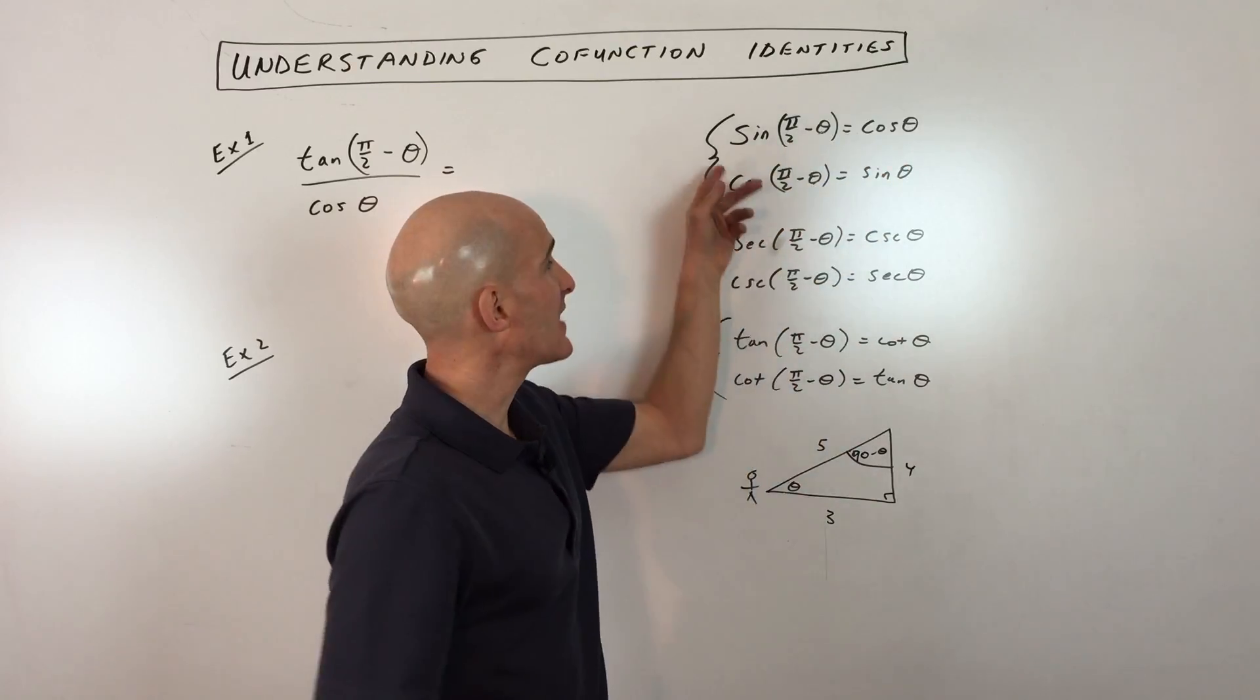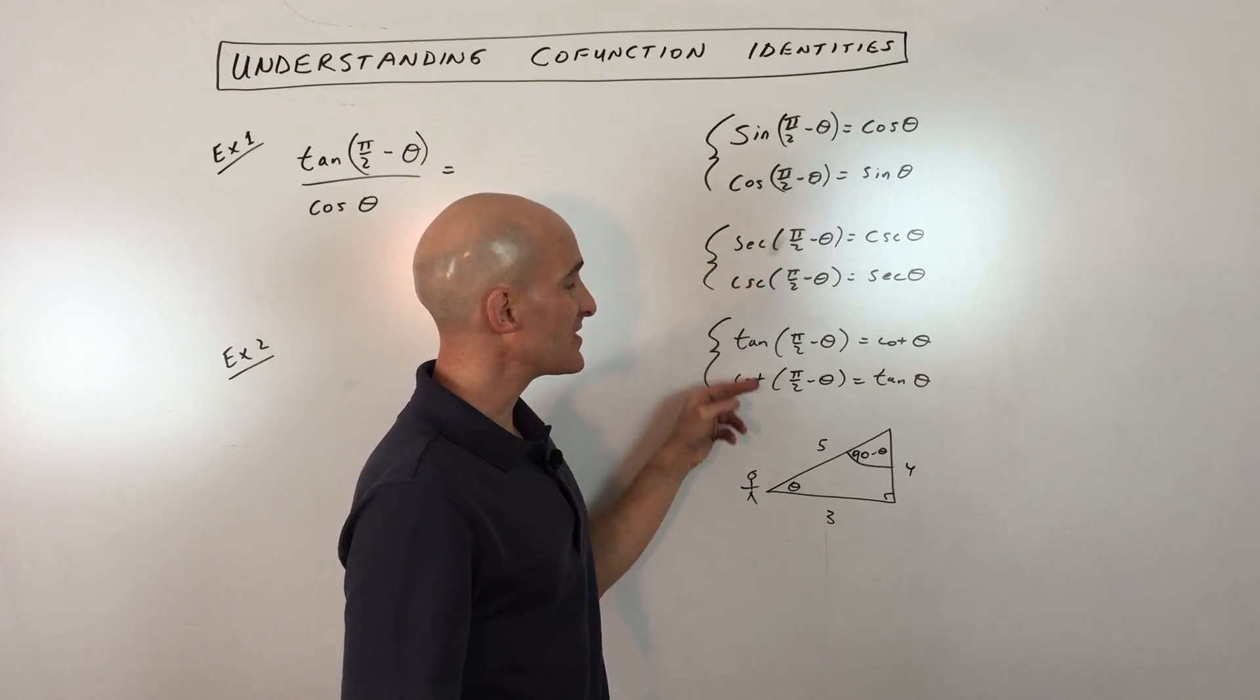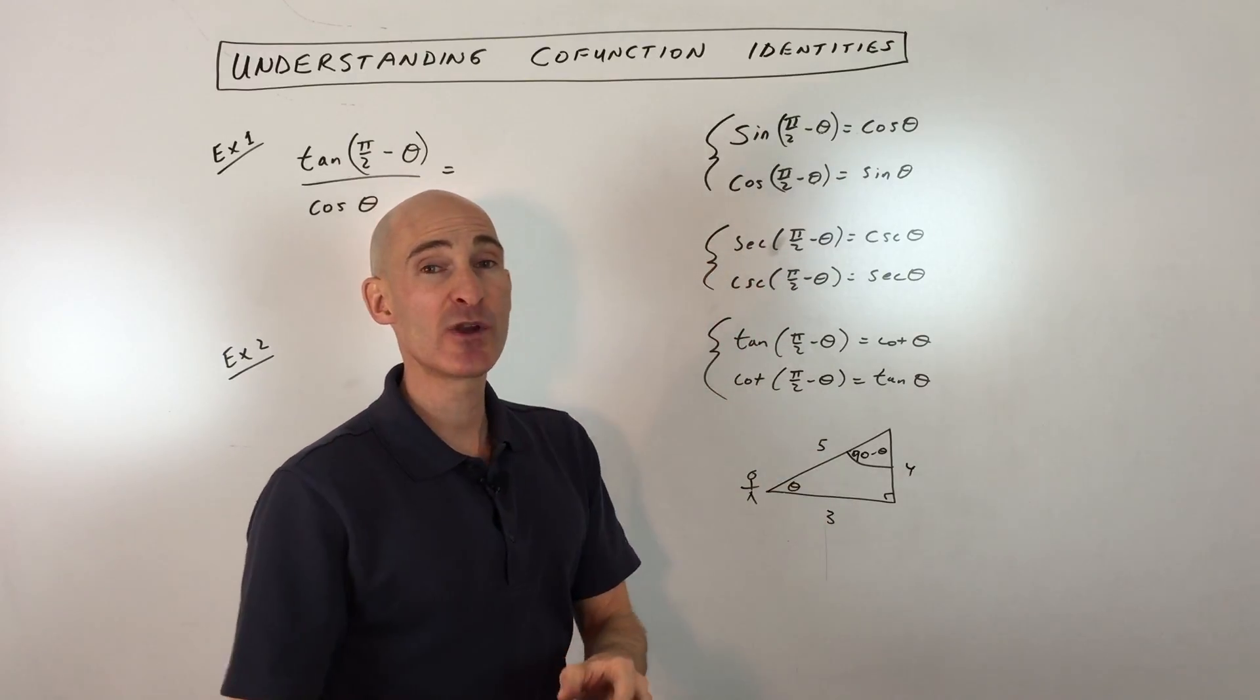So if you can remember that sine and cosine are co-functions, secant and cosecant, tangent and cotangent, that's an easy way to remember them.